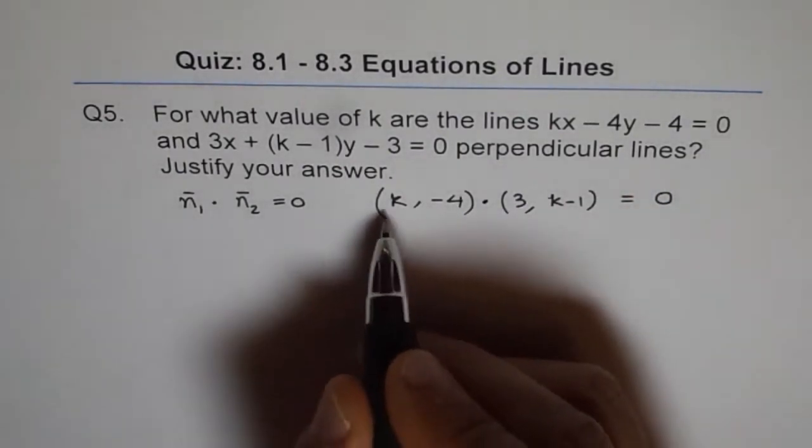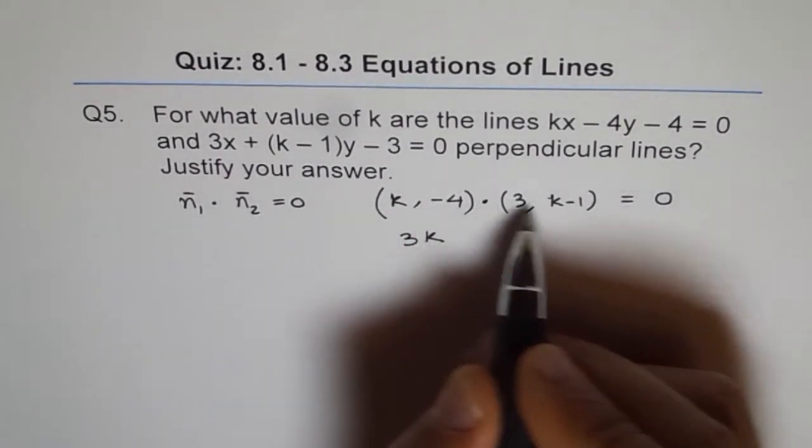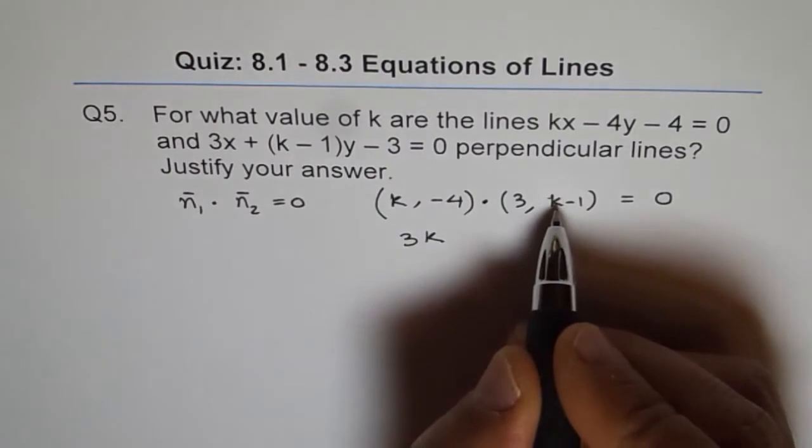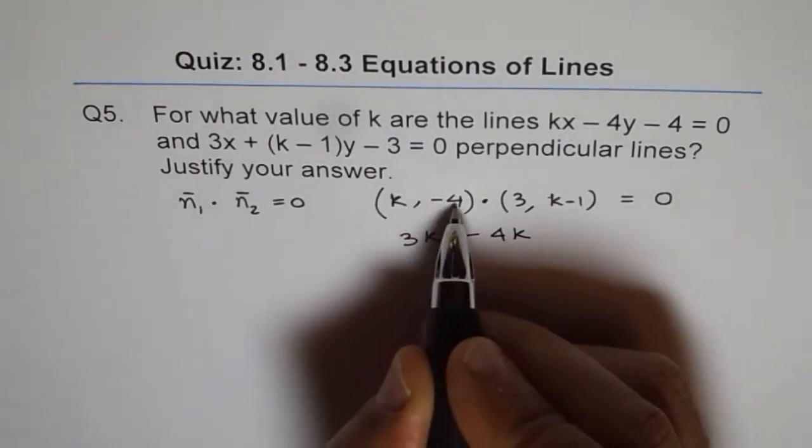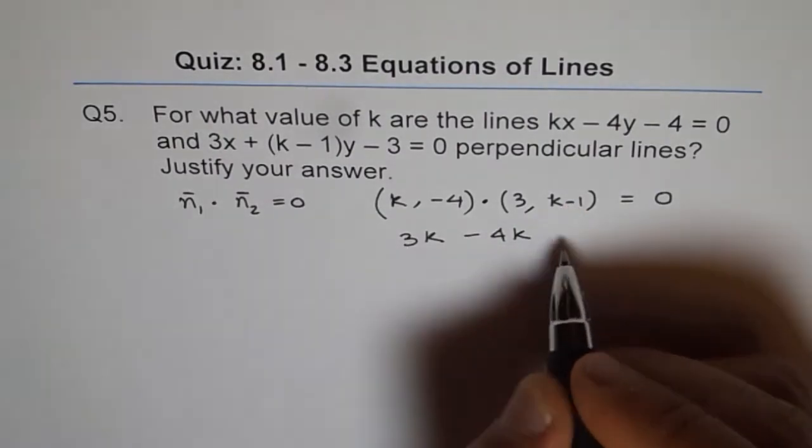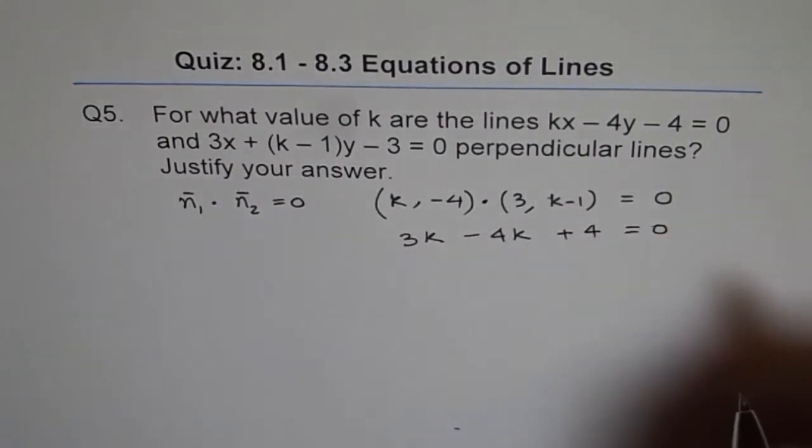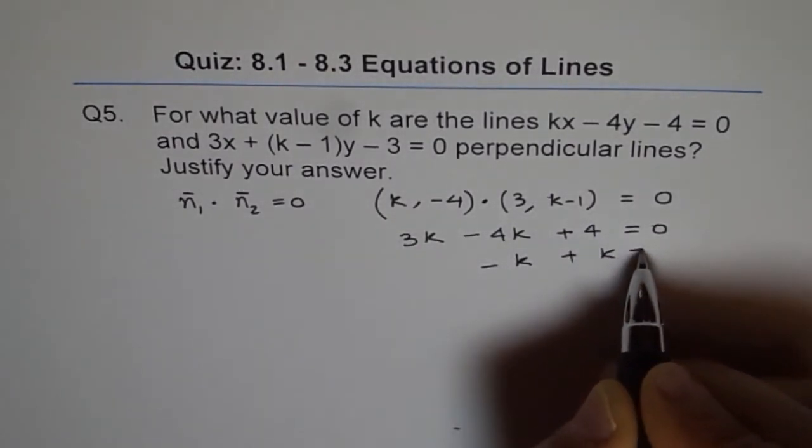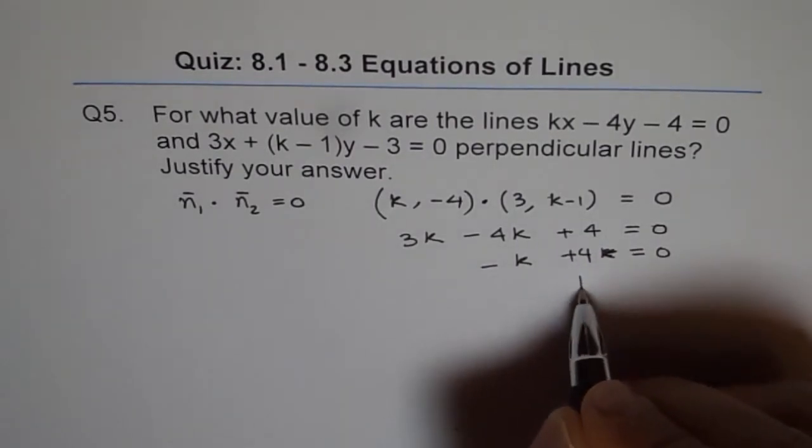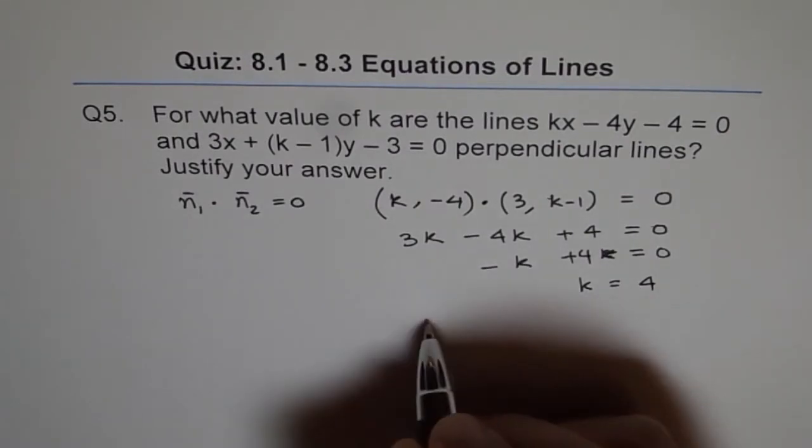So it becomes 3k, and then this becomes minus 4 times k, which is minus 4k, and minus 4 times minus 1, which is plus 4 equals 0. This gives us minus k plus 4 equals 0, or k equals 4. So the answer is k equals 4.